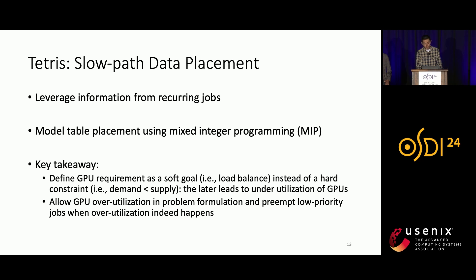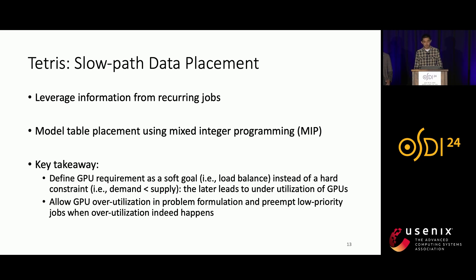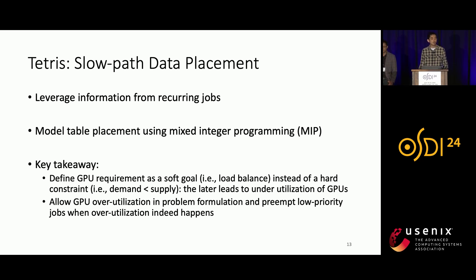One key takeaway that distinguishes our work from prior ones: we find it's better to define the GPU requirement as a soft goal—balancing GPU demand across regions as much as possible—rather than a hard constraint requiring GPU demand to be smaller than supply in every region. The reason is that the MIP problem is NP-hard, so we can only get an approximate solution. Using a hard constraint is likely to lead to GPU underutilization. Since GPU is very expensive, our strategy is to allow GPU overutilization in the formulation, and if overutilization happens in practice, we can preempt low-priority jobs, which maximizes our GPU allocation rate.